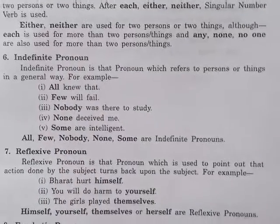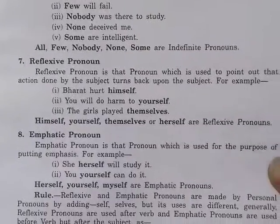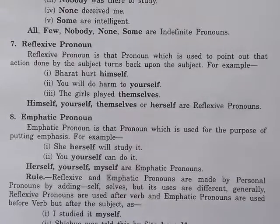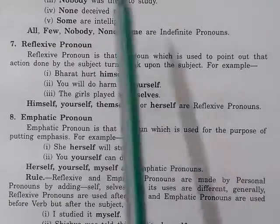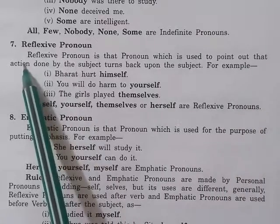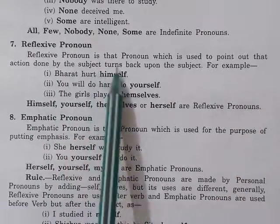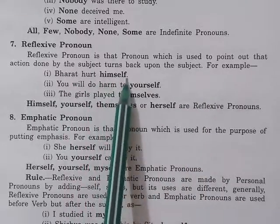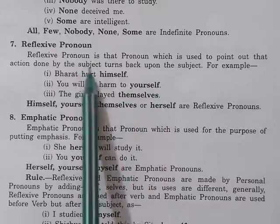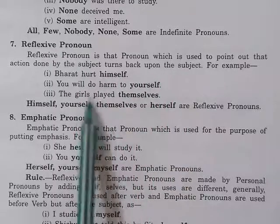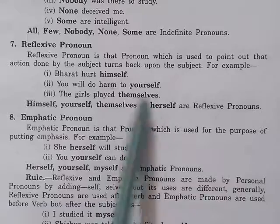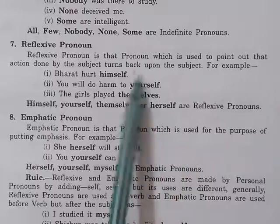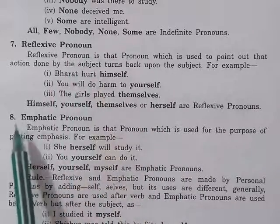The seventh one is reflexive pronoun. Reflexive pronoun is that pronoun which is used to point out that the action done by the subject turns back upon the subject. For example: Bharat hurt himself, you will do harm to yourself, the girls played themselves. Himself, yourself, themselves, or herself are reflexive pronouns.